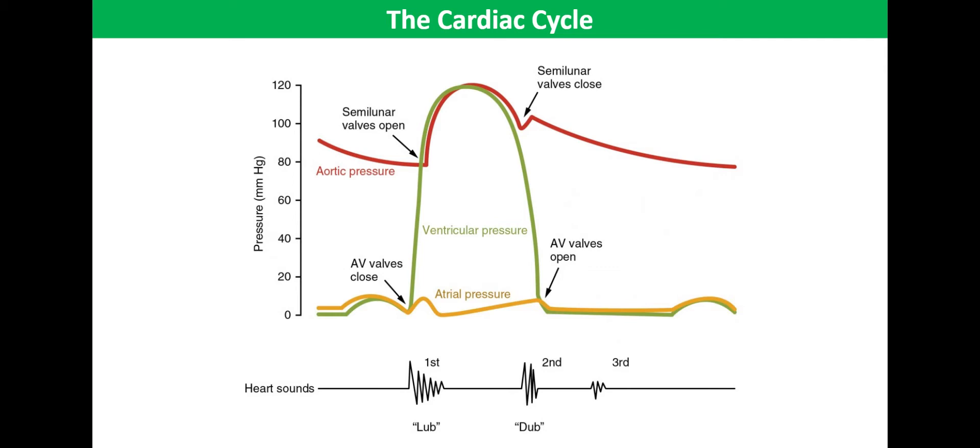We're going to begin by looking at the atrial pressure, which is represented on the graph in front of you as an orange line. Atrial pressure is always relatively low because of the thin walls of the atrium. The thin walls of the atrium mean that they can't contract much, producing much force.